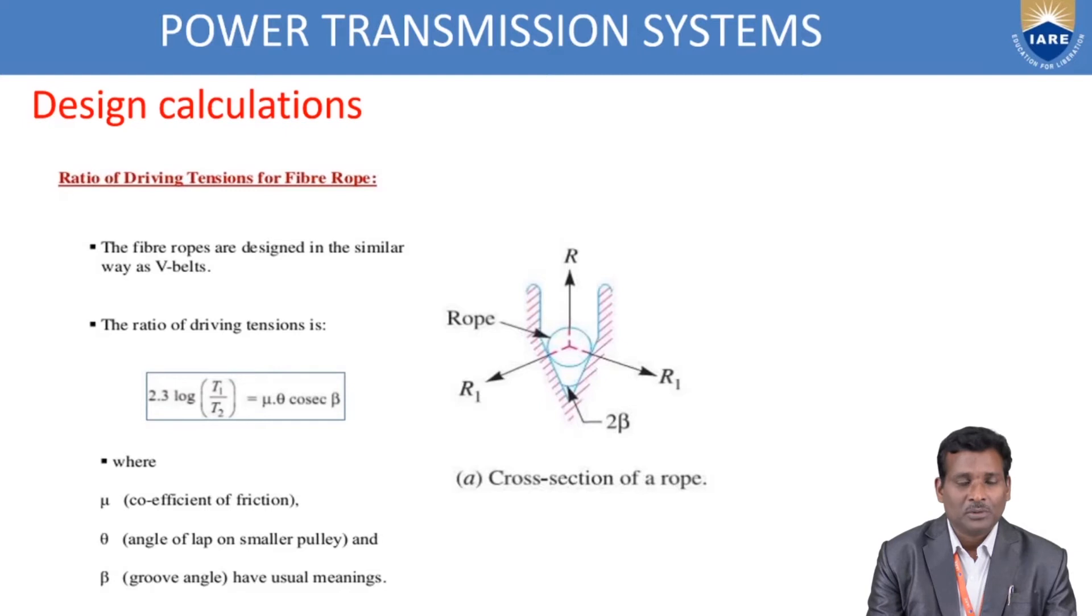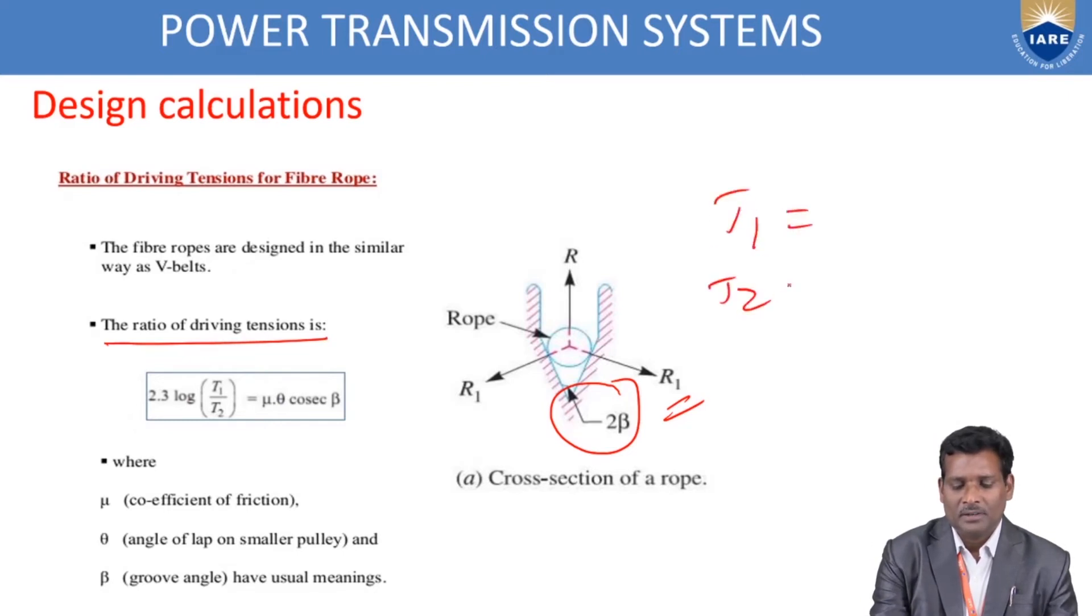I want to discuss some design calculations of a rope drive. The design calculations for rope drive are the same as that of V-belt drive. The rope drives run on a groove pulley. The groove angle is 2β, and R1 is the radius of the rope. You need to calculate the driving tensions, T1 and T2. T1 is the tight-side tension, and T2 is slack-side tension.